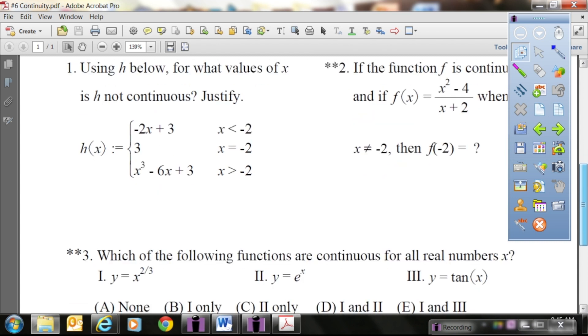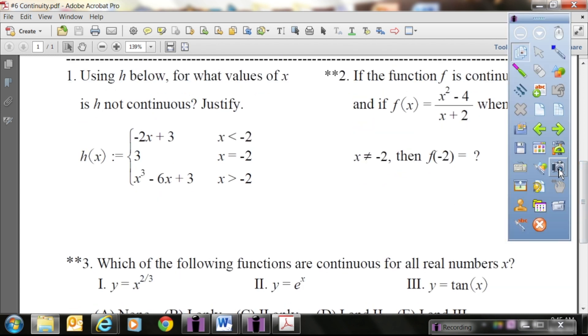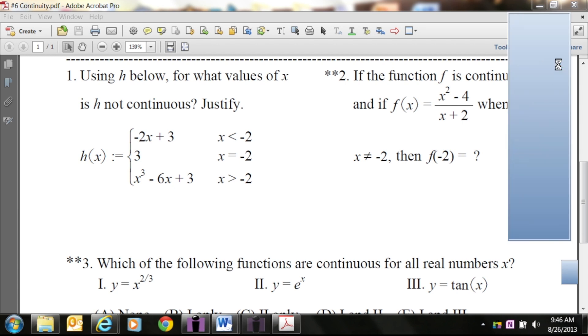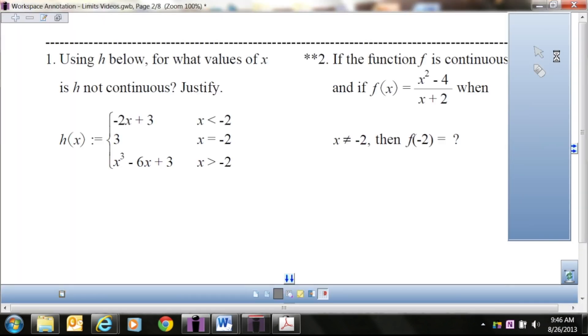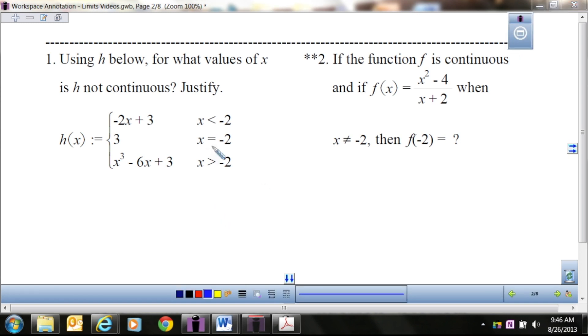All right, so it says use h below for what values of x is h not continuous. So here's the deal. What we're going to be concerned with in this particular problem, okay, this is a line and this is a cubic, and we know that cubics and lines are very continuous. They're nice and flowy and smooth and continuous. So this graph is breaking at negative two. So our job is to figure out if where the line and the cubic break up, do they meet? And if they meet, do they meet at three? Because all three pieces have to come together for it to be continuous.